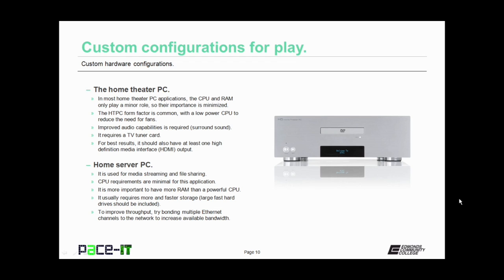Now let's move on to the home server PC, which is often used for media streaming and file sharing. The CPU requirements are fairly minimal — it's more important to have more RAM than a powerful CPU. The home server PC, especially when used for media streaming, usually requires more and faster storage. Large, fast hard drives should be included. To improve throughput for a media streaming PC, you might want to consider bonding multiple Ethernet channels to the network, which will increase your bandwidth.